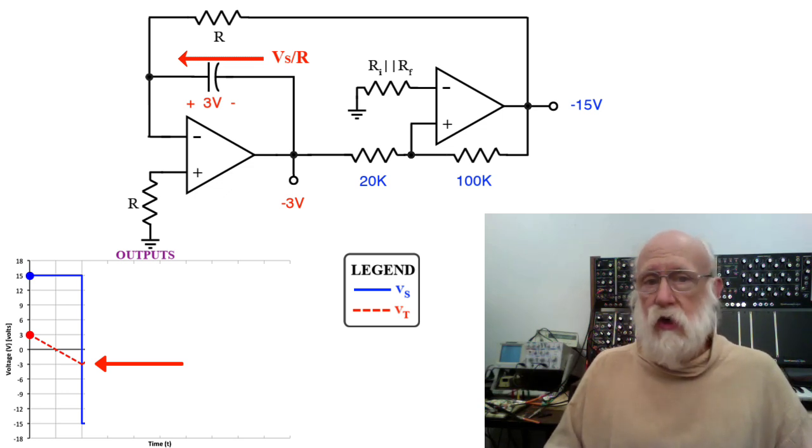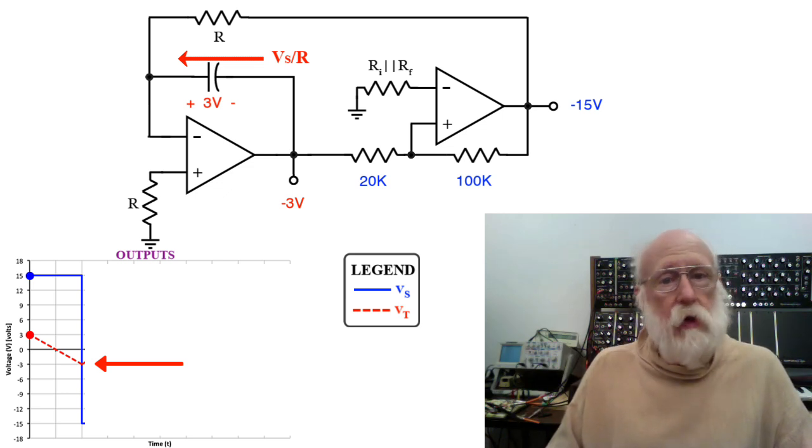Which then starts discharging the capacitor C. So the voltage across the capacitor C reached plus 3 volts, but now it's pulling current out of it, and so it starts heading back down, again at a constant rate.